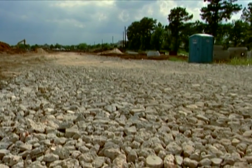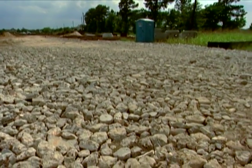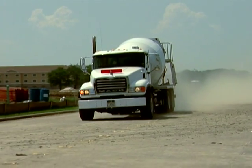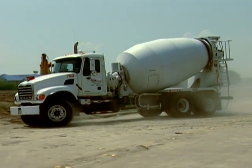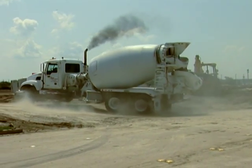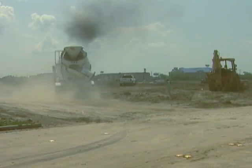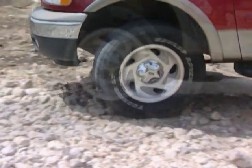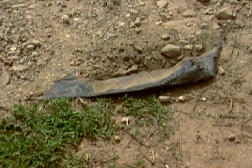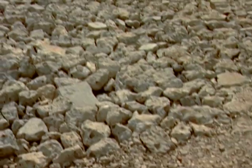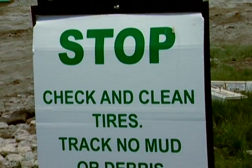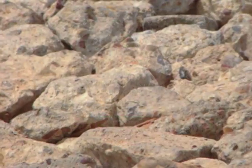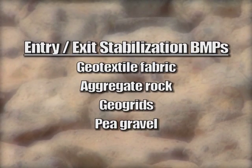Once you have protected the perimeter, you will need to stabilize all of the entrances and exits to and from the site. Nothing will get you into trouble faster than obvious tracking of mud and sediment from your project site onto public streets. In the eyes of regulators, dirty streets around a construction site act as a red flag advertising compliance problems. One of the most common ways to stabilize entrances and exits is to install a layer of geotextile fabric covered with 2-inch aggregate rock. This gives you a hard surface that stops heavy equipment from sinking into the mud and also helps to clean tires of dirt picked up from the site. Other entrance stabilization methods include using geogrids and pea gravel.